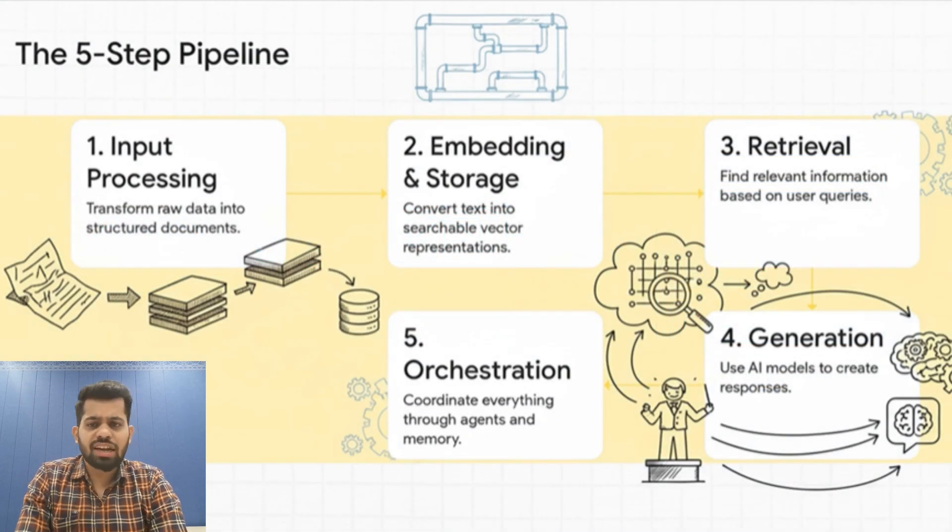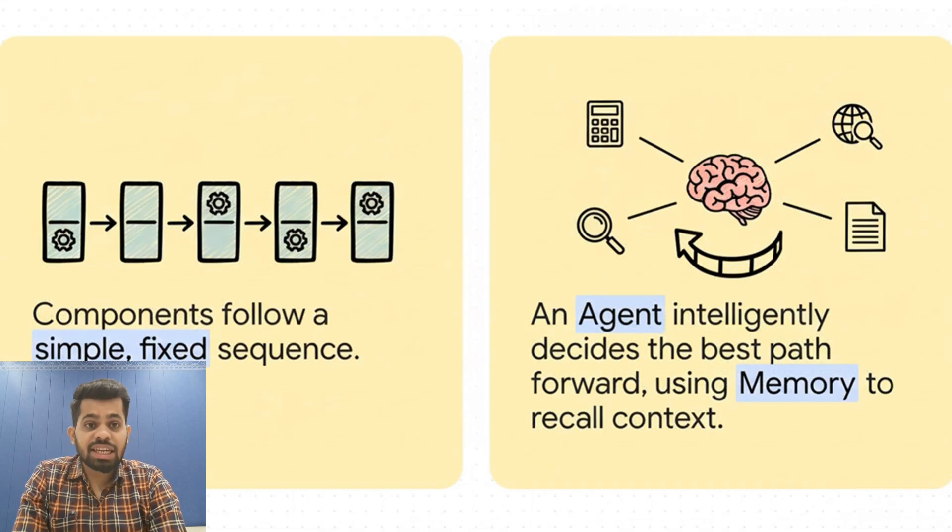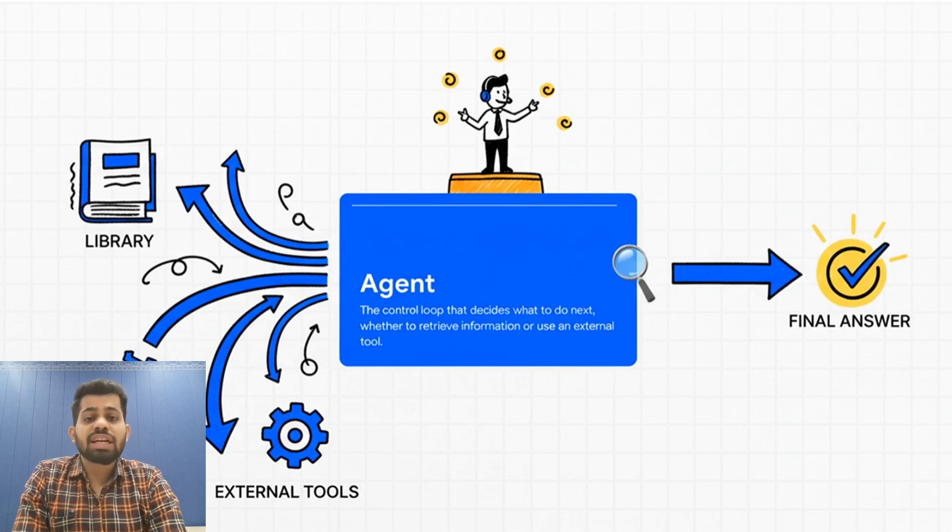The orchestration layer sits centrally, managing complexity and maintaining state. This layer contains agents and memory. An agent is not just running a predefined workflow - it's making decisions about what to do next. Agents are arguably the most sophisticated component in this whole system. They are the control loop that decides what to do next. It can assess a user's request, decide if it needs to retrieve information, or if it needs to use an external tool to solve the task.